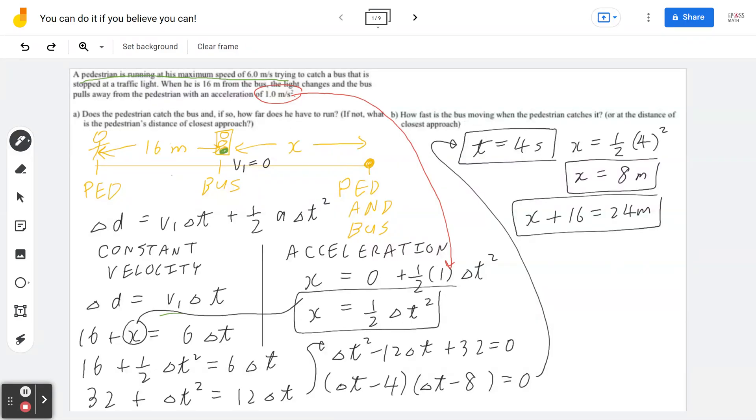Now, in part B, they're asking how fast is the bus moving when the pedestrian catches it. So we want to find out how fast. There's another kinematic formula: V2 equals to V1 plus A times T. And in this scenario, the initial velocity again is zero. We know the acceleration is 1 meter per second square, and time is going to be exactly 4 seconds. So the bus is moving at 4 meters per second at the time of contact.